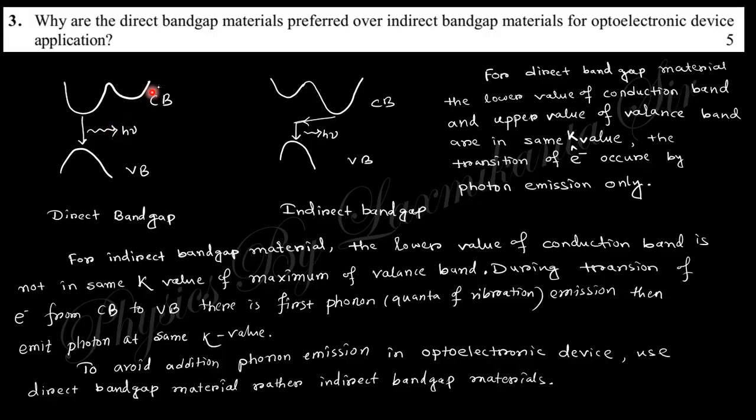In indirect bandgap, there are two radiations: phonons (vibrational quanta) and photons (light quanta). Direct bandgap has only photons. Silicon and germanium are indirect bandgap materials.